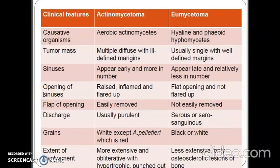The major differences between actinomycetoma and eumycetoma: the causative organism of actinomycetoma is aerobic actinomycetes and it is hyaline or phaeoid hyphomycetes in eumycetoma. The tumor is multiple and diffuse with ill-defined margins in actinomycetoma and usually single with well-defined margins in eumycetoma. Sinuses appear early and are more numerous in actinomycetoma, appearing late and relatively fewer in eumycetoma. The sinus openings are inflamed and flared in actinomycetoma and flat in eumycetoma.